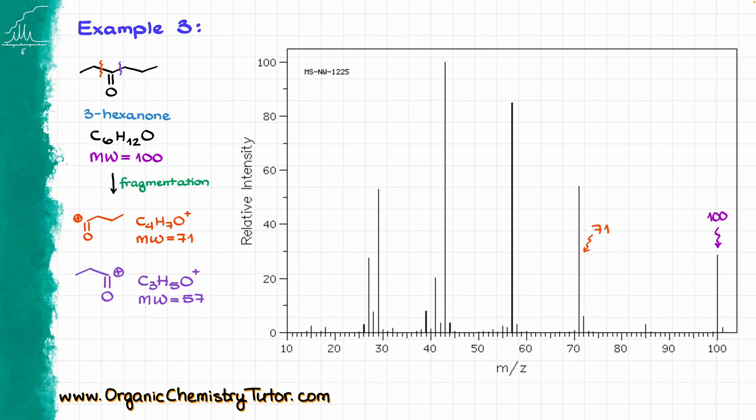Next, we have this break that we can do on the other side of our carbonyl, giving me the following carbocation with a molecular formula C3H5O, and that one is at 57, so we see that signal as well. Then, one other thing, if you have seen my previous videos, you would know that we can also have a McLafferty rearrangement in this case, and McLafferty rearrangement is also going to give us a chunk at 71, so that is also a piece that we are seeing over here.